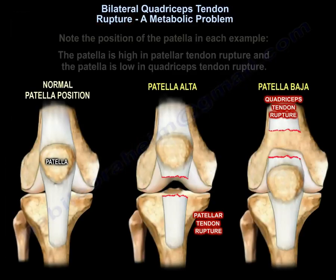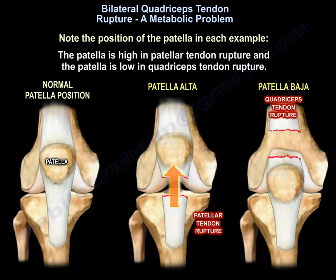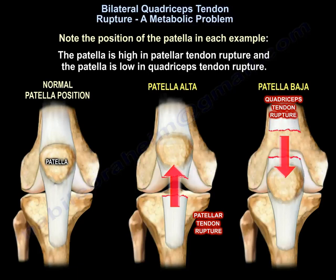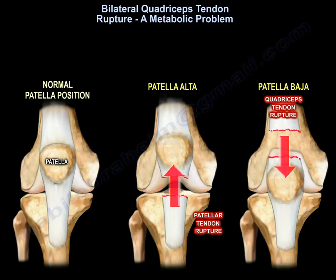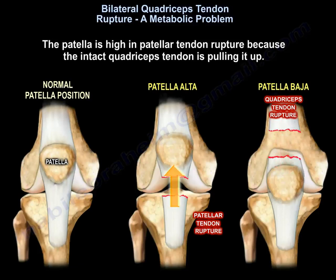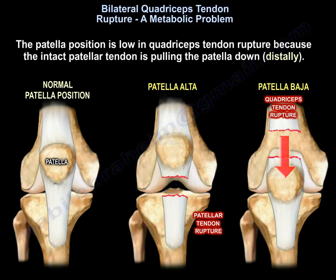Here is an example of rupture of the patellar tendon, and here is an example of rupture of the quadriceps tendon. Note the position of the patella in each example. The patella is high in patellar tendon rupture and low in quadriceps tendon rupture. The patella is high in patellar tendon rupture because the intact quadriceps tendon is pulling it up, and low in quadriceps tendon rupture because the intact patellar tendon is pulling the patella down distally.